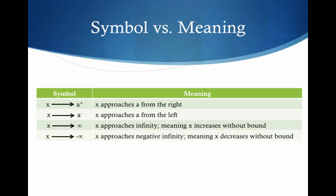Here's a breakdown of the notation — you're going to see this a lot in the homework. When x is approaching a from the right, you'll see a plus superscript. If you see a negative superscript, x is approaching a from the left. That minus just means from the left, and the plus just means from the right. Similarly, x can approach positive infinity — that means x is increasing without bound, way out on the right side of the x-axis. X can also approach negative infinity, meaning we're far out on the left side.